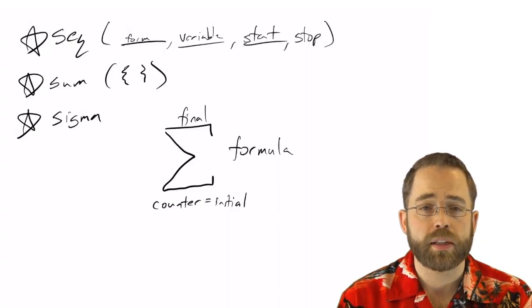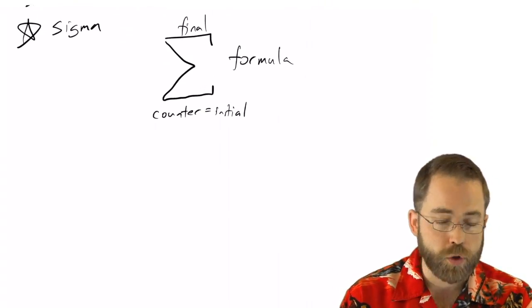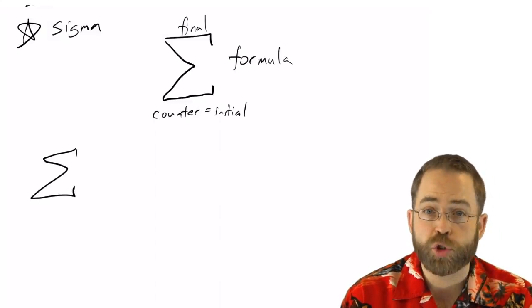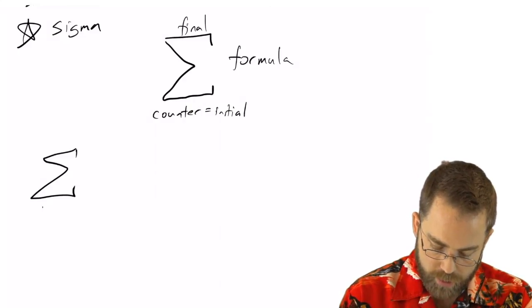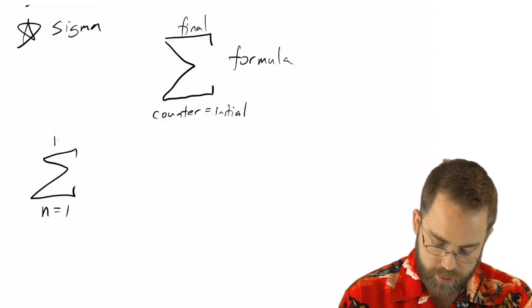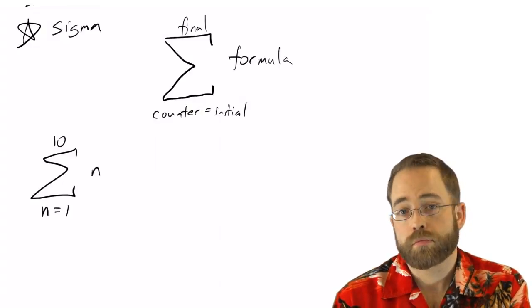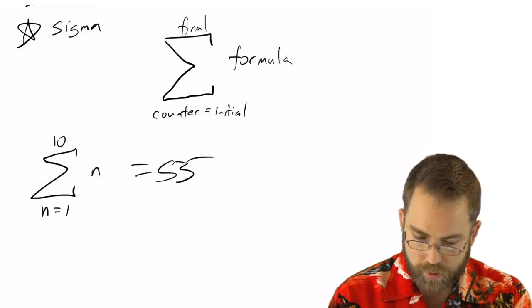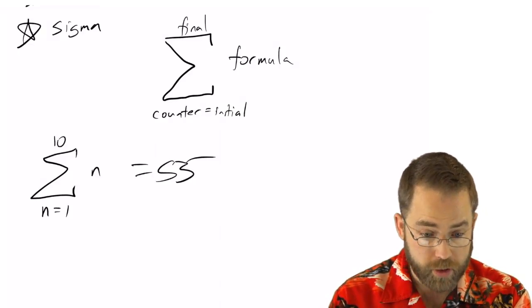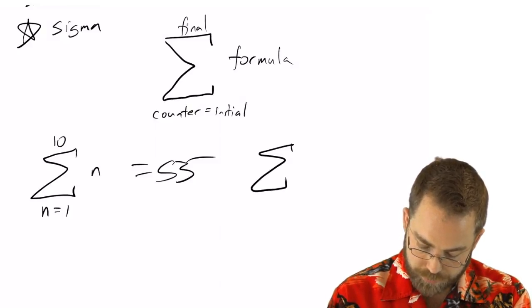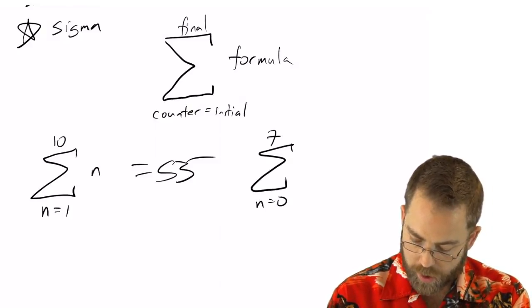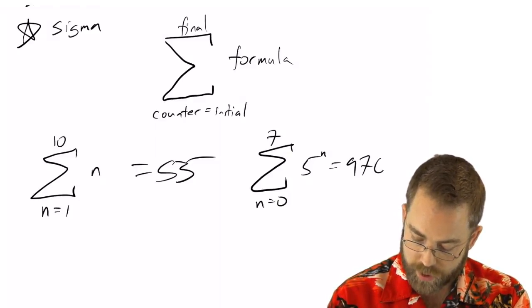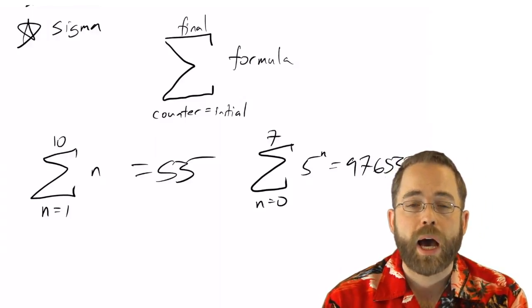And then sigma means add them up. So for example, if you wanted to add up 1 to 10, then you would say going from, unless you can pick any letter variable you want, with n going from 1 to 10, add up n. That whole expression is equal to 55. Okay, so then the more complicated one that I did just a second ago was saying, add up from 0 to 7, 5 to the n, and that turned out to be 97655. So you can see what a powerful tool this is.